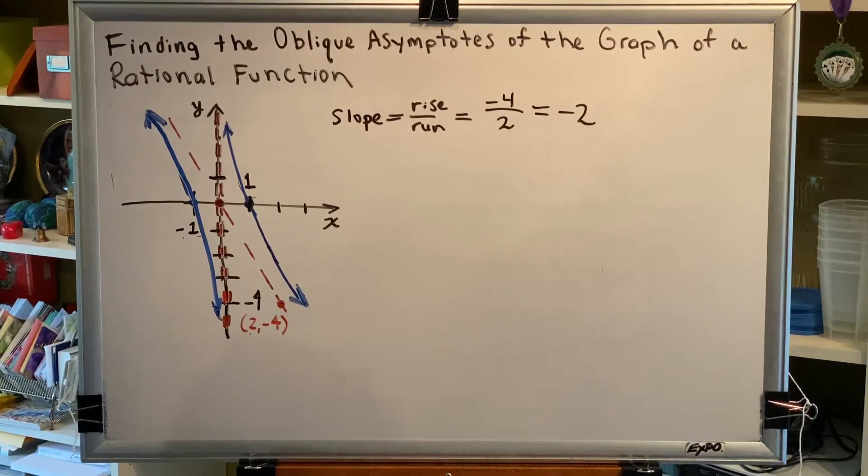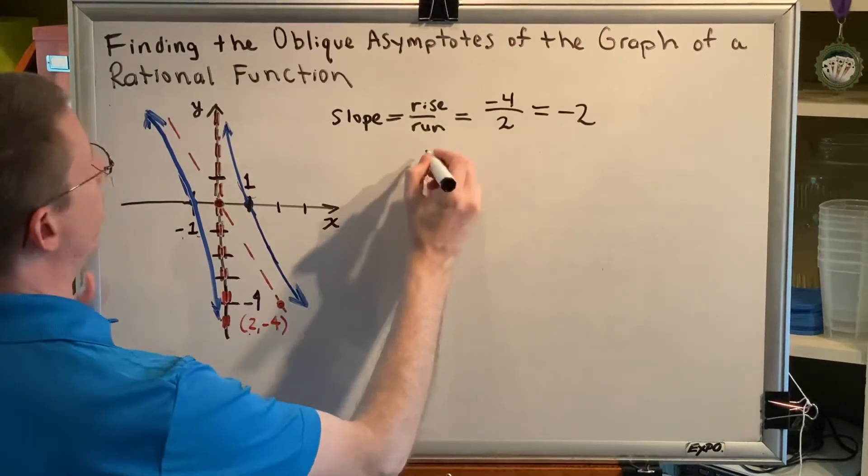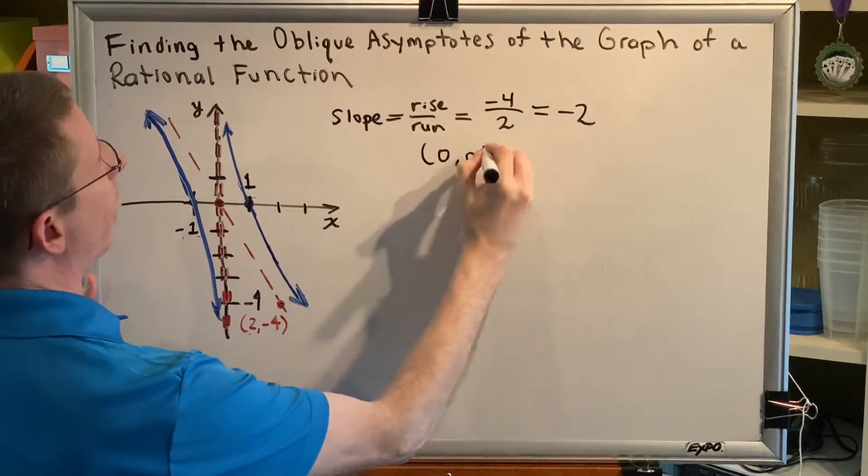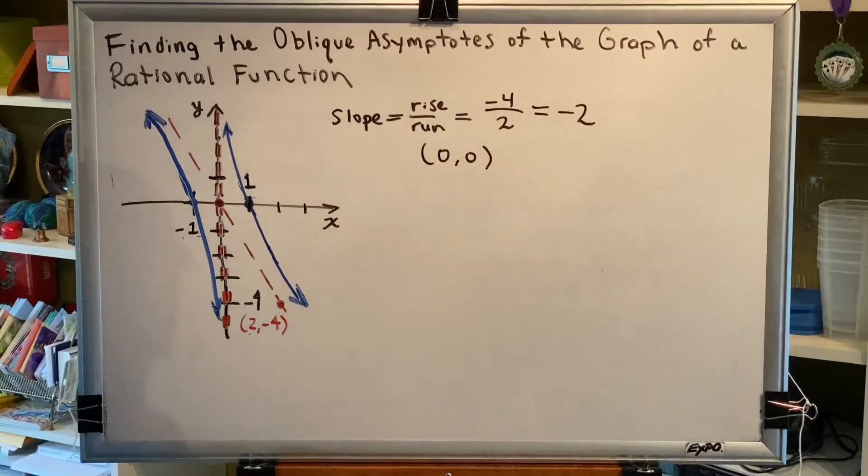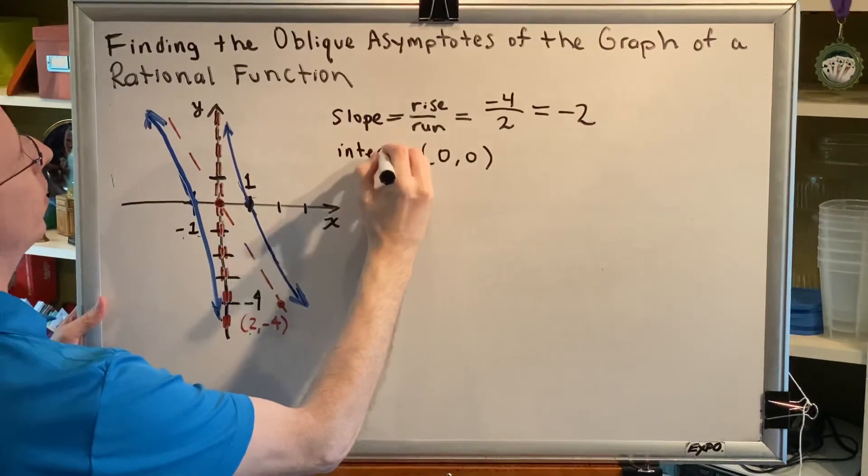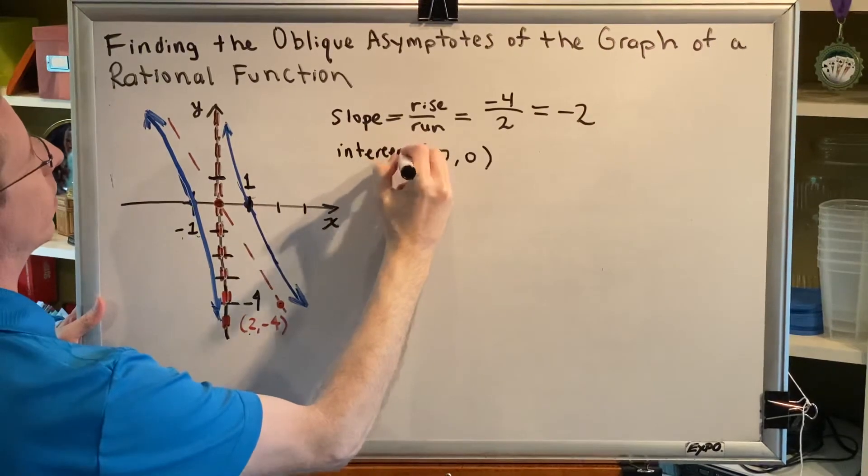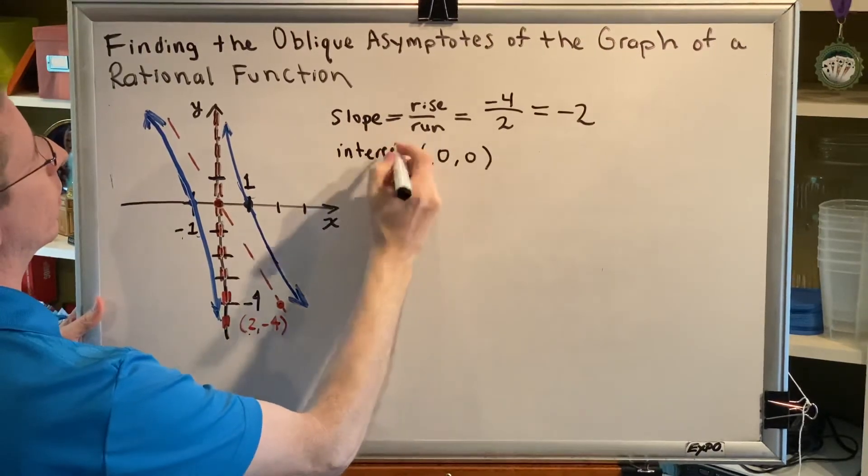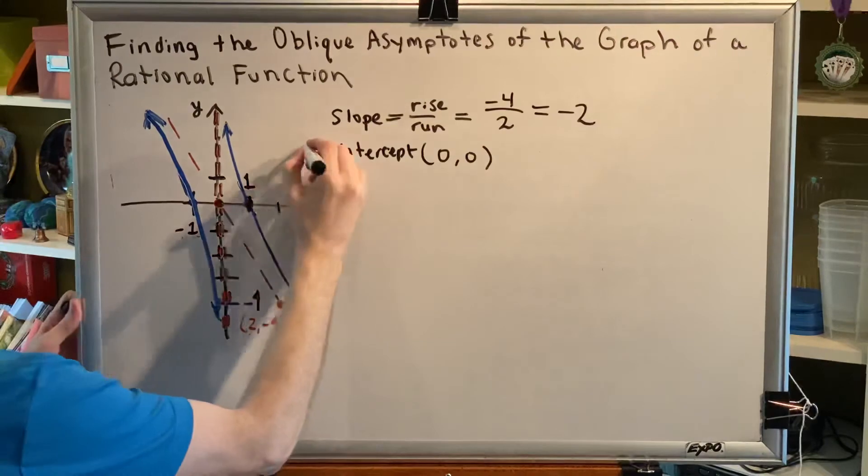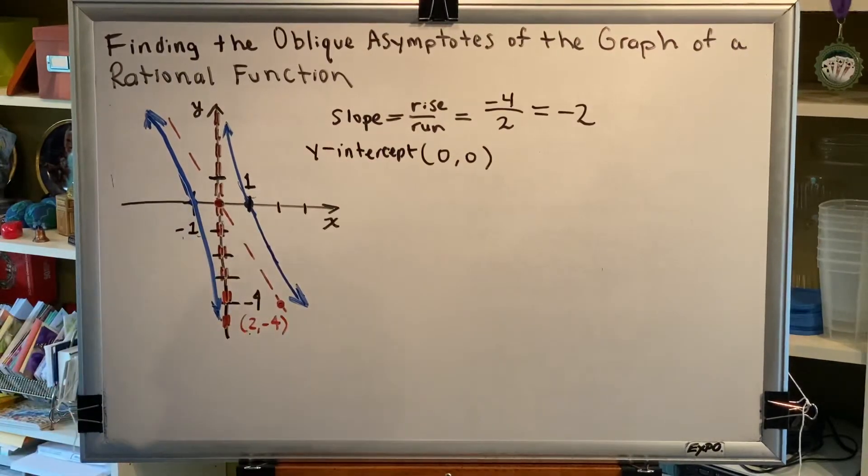But one of the things we learned in a previous video is if you can choose a point that has an x coordinate of zero, which would make the point a y-intercept, that is the better, easier point to use. Well, we do have such a point. So our y-intercept for this particular slanted line is the ordered pair zero comma zero.